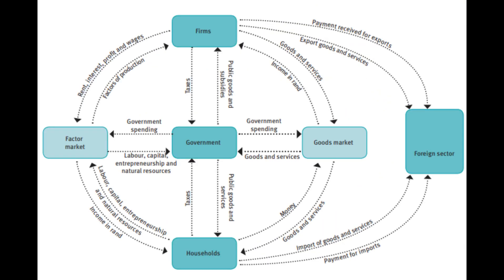But there's more to it. This simple cycle gets more complex when we include the government, financial institutions, and the foreign sector. The government collects taxes from households and businesses — this is considered a leakage because it removes money from the circular flow. But the government also injects money back into the economy through spending on public goods and services like healthcare or infrastructure.